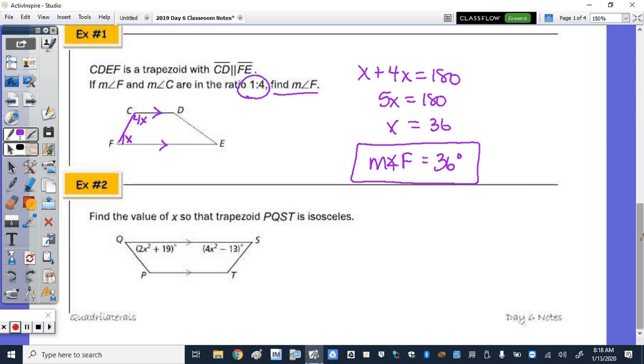Now down to example two. Find the value of X so that the trapezoid is isosceles. Well, if I wanted it to be isosceles, then the two base angles Q and S would have to be equivalent. So let's set 2X squared plus 19 equal to 4X squared minus 13.